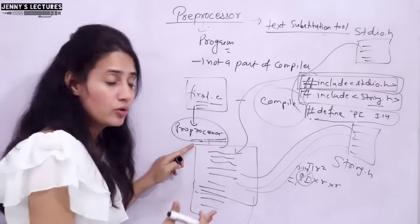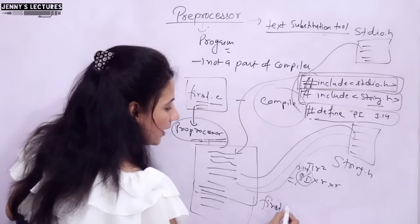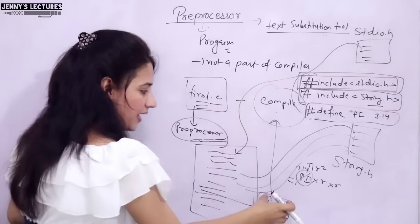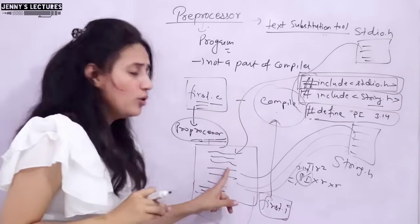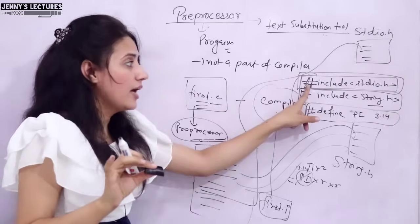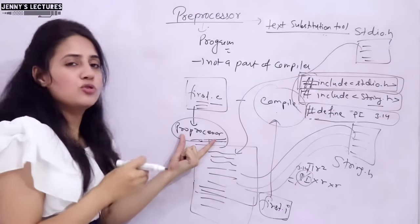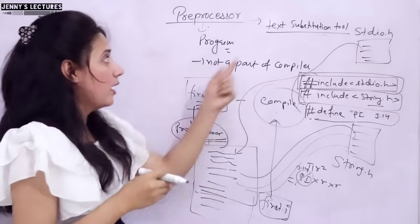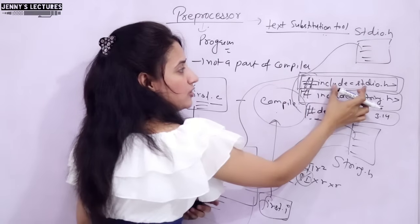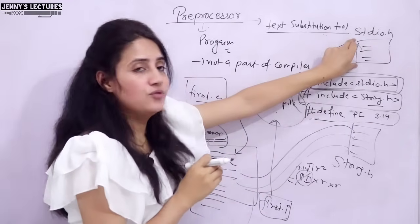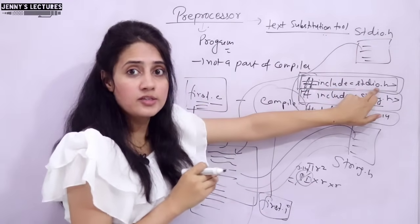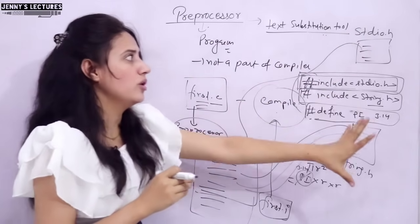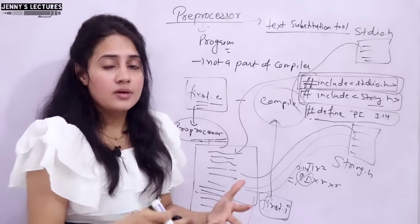This is the expanded source code - also called intermediate source code. The single hash include line has been expanded with the complete file content. This expanded file is stored as first.i. The compiler then processes this .i file, not the original .c file. In this .i file, there are no more lines starting with hash - all have been resolved by the preprocessor. That's why it is a text substitution tool - it substitutes lines with complete file content.